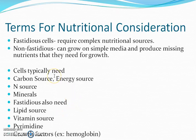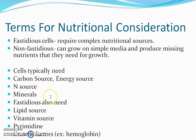Bacterial cells typically need some sort of carbon source and an energy source — sometimes it's the same thing, sometimes it's not. They also need a nitrogen source and minerals.